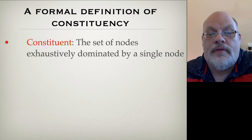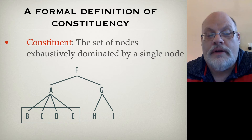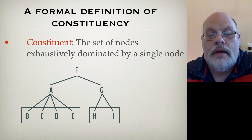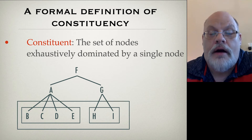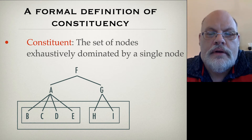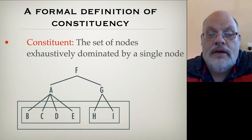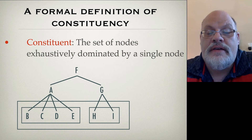This gives us the definition of constituency. A constituent is a set of terminal nodes exhaustively dominated by a single node. So B, C, D, and E here form a constituent labeled A. H and I also form a constituent — they're exhaustively dominated by G. And B, C, D, E, H, and I all form a constituent dominated by F. Here's a trick question: are A and G a constituent? No, because A and G are not terminal nodes. Exhaustive domination only works over terminal nodes. So although A and G together form F, they do not form a constituent. The constituent is B, C, D, E, H, and I.